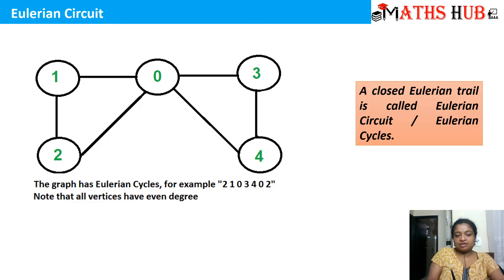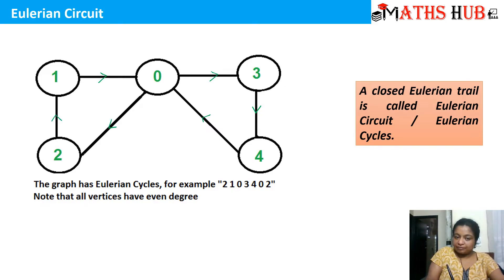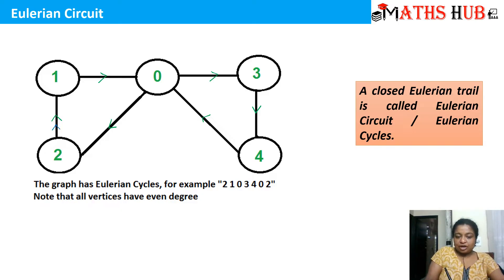Look at this graph. If I start from vertex 1, I can go 1 to 0, then 0 to 3, then 3 to 4, then 4 to 0, then 0 to 2, and finally 2 to 1. This is one of the Eulerian circuits. Similarly, you can start from vertex 2: go 2 to 1, 1 to 0, 0 to 3, 3 to 4, 4 to 0, and then back to 2. You will get many Eulerian circuits in this diagram — all edges must appear exactly once, and you can travel the vertices any number of times.